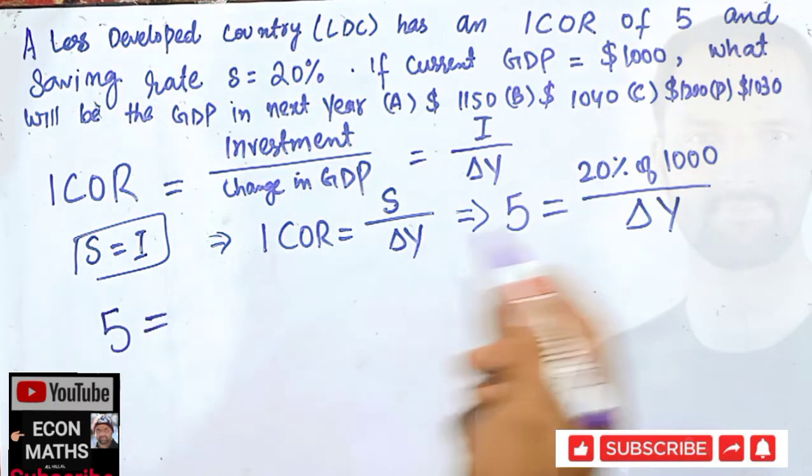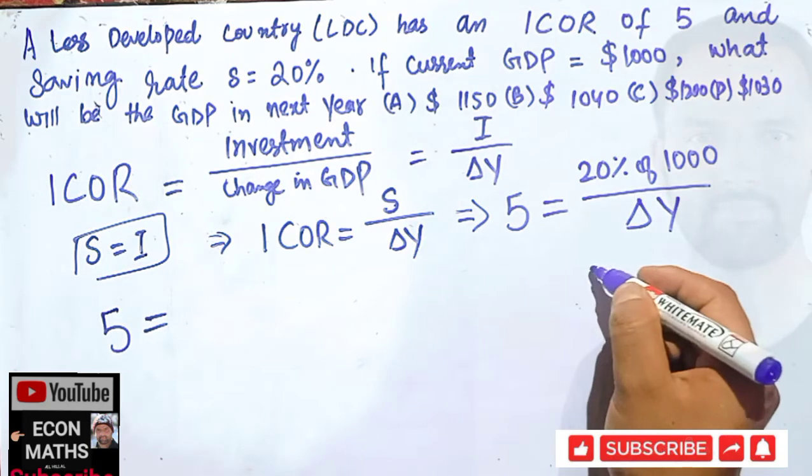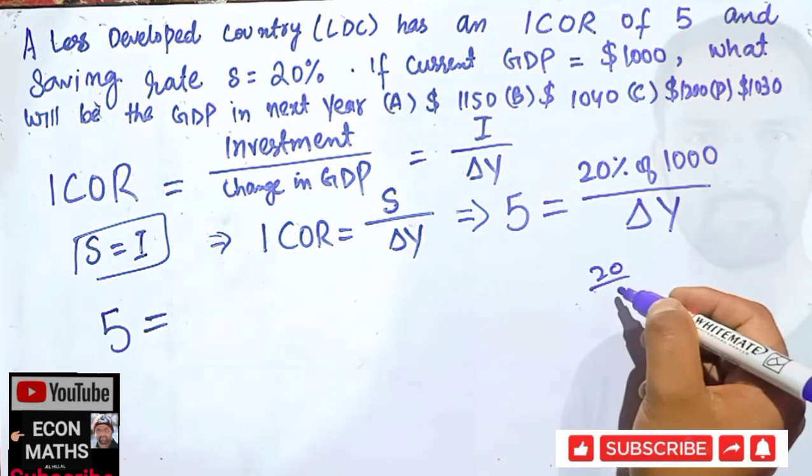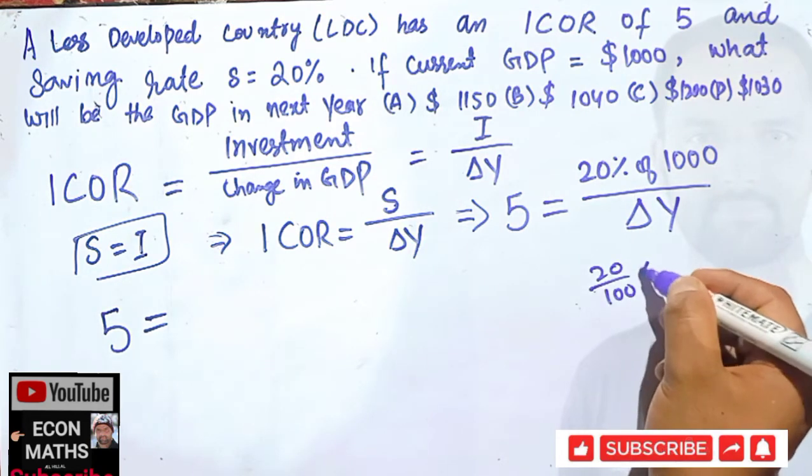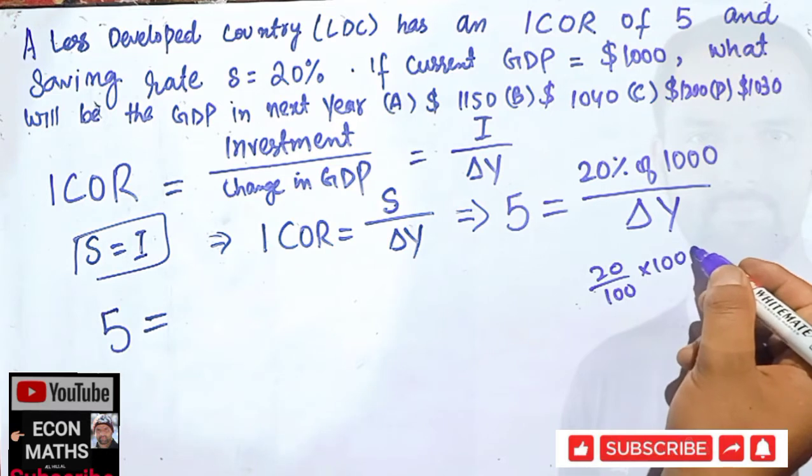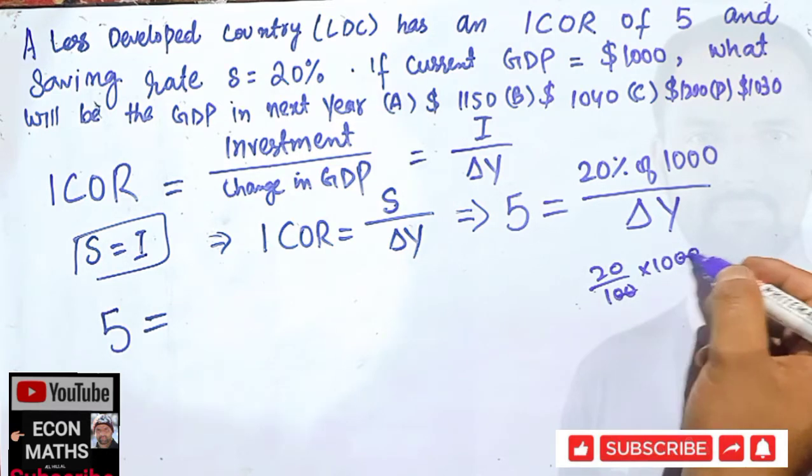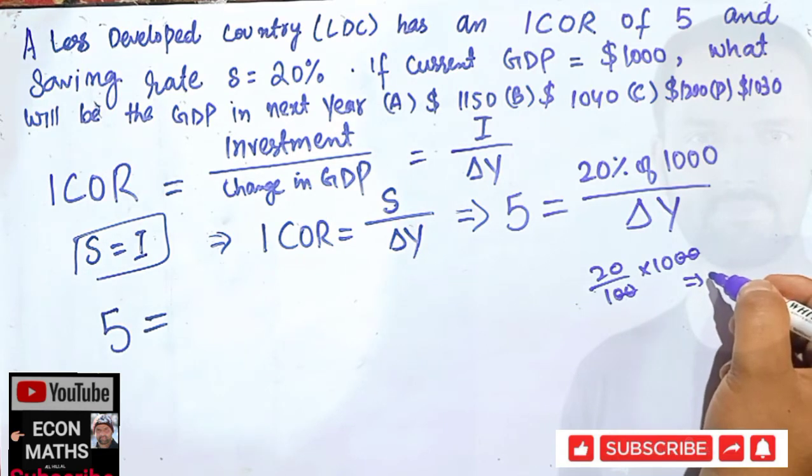That means 5 is equal to, now what is 20% of 1000? So we can write 20 upon 100 into 1000. So these two get cancelled, so 20 into 10 comes out to be 200. So I will write here 200.